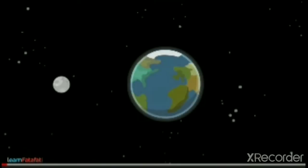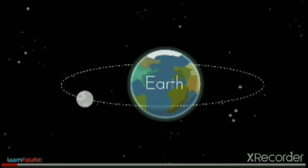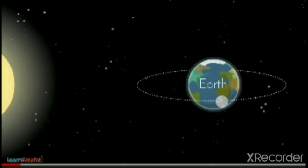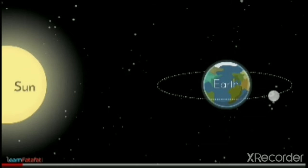Hello children, today we are going to study about eclipses. We know that the sun is a source of light and the moon is a natural satellite of Earth. The moon revolves around the Earth and the Earth also revolves around the sun.